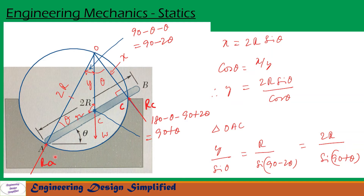We now form a right angle triangle A, O, C. In this triangle, the angle at A is theta. Let the distance O to C be x, and the distance O to A is 2R, which is the diameter of the hemispherical bowl. From triangle AOC, x can be written as x = 2R sin θ.